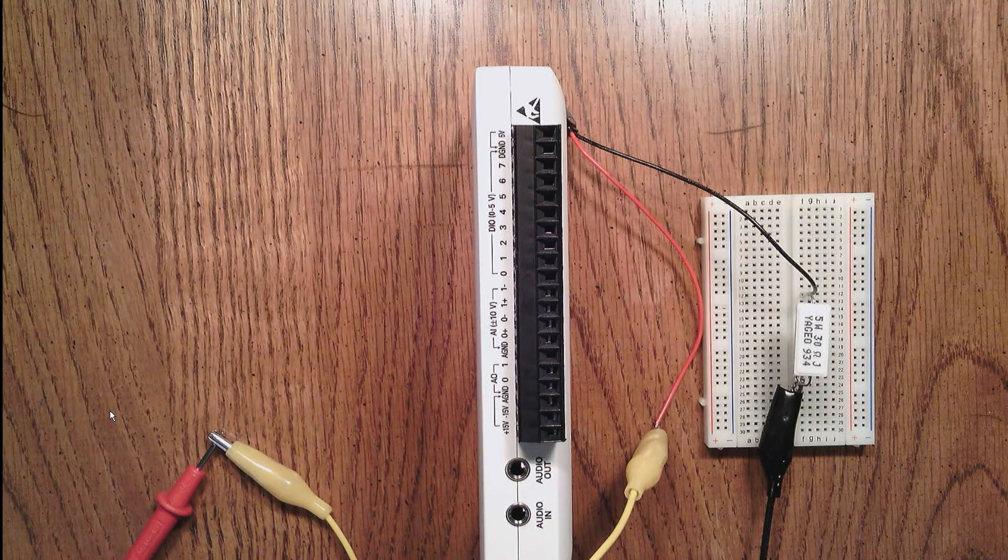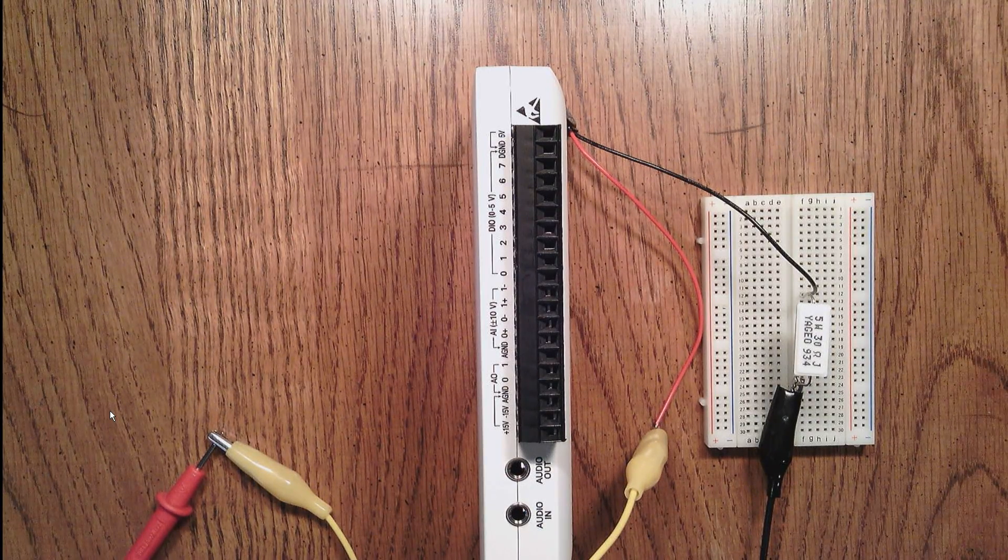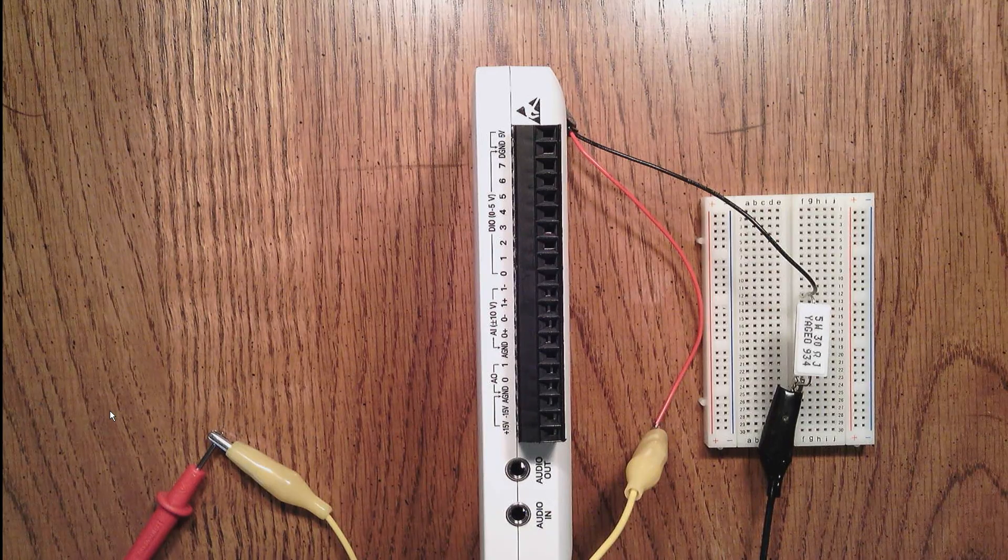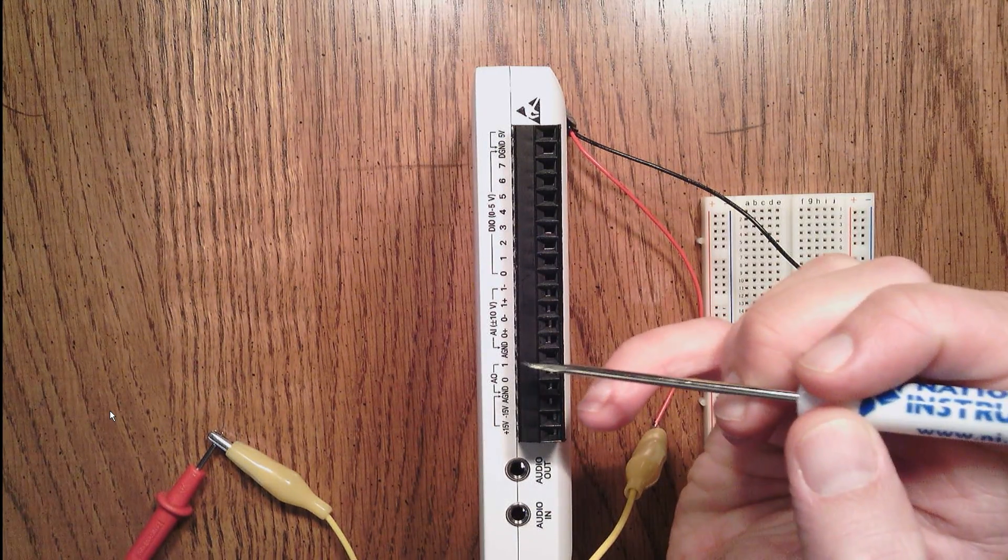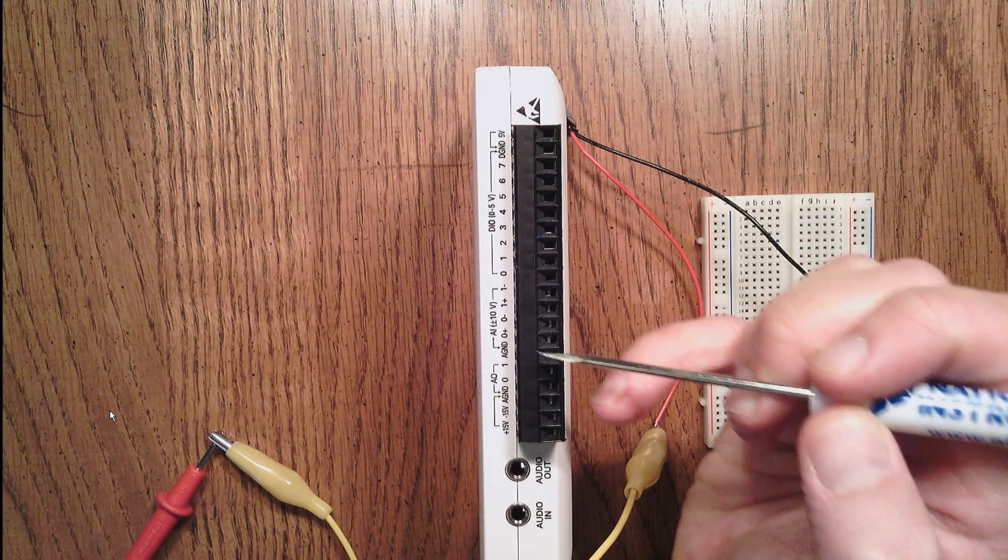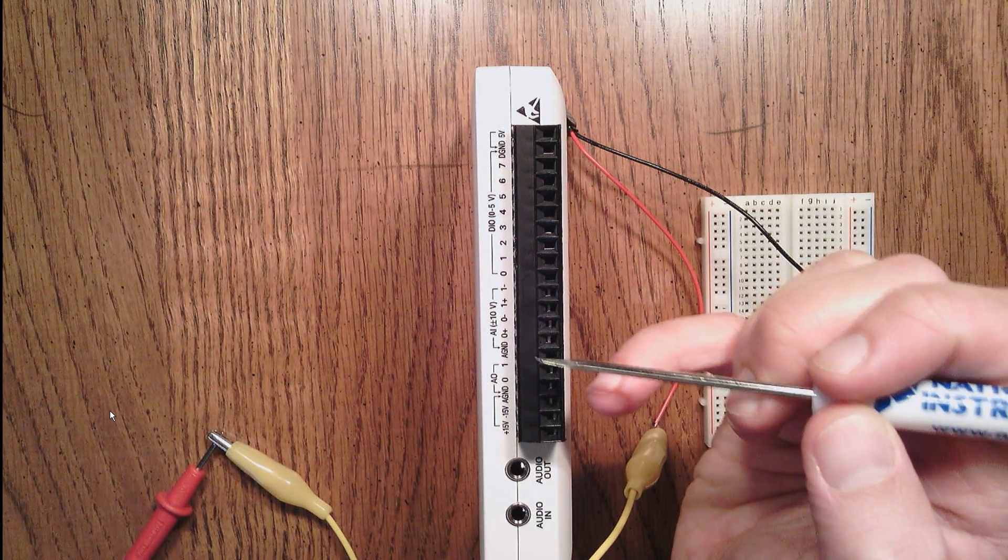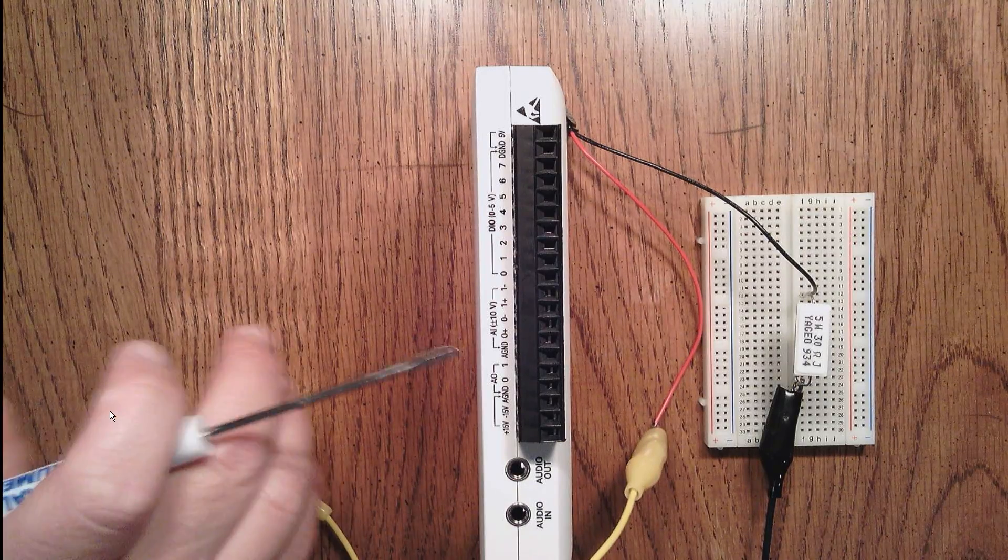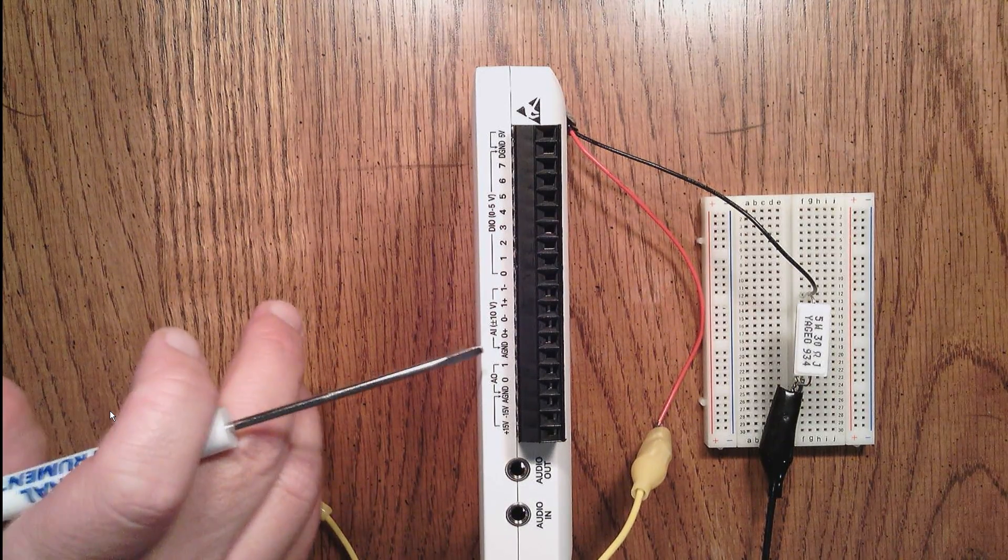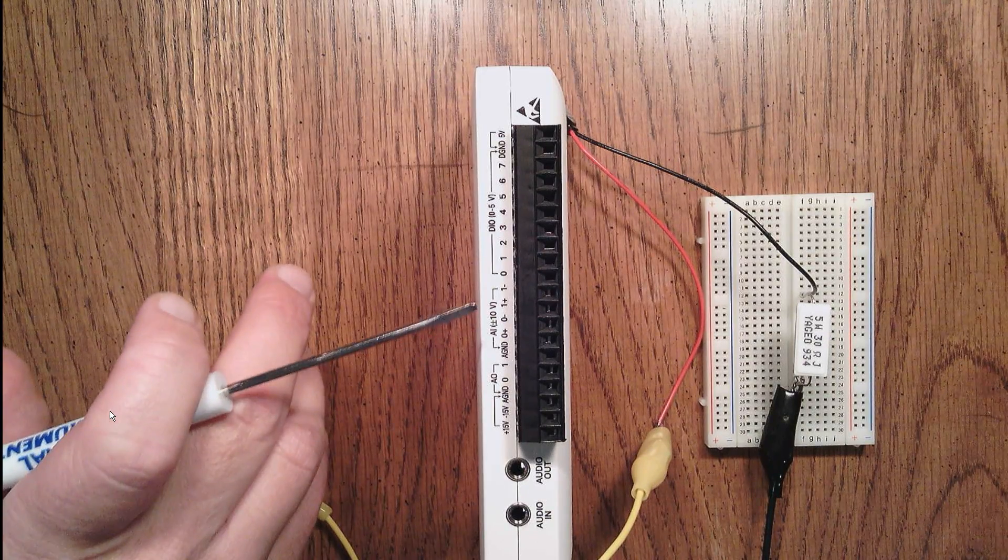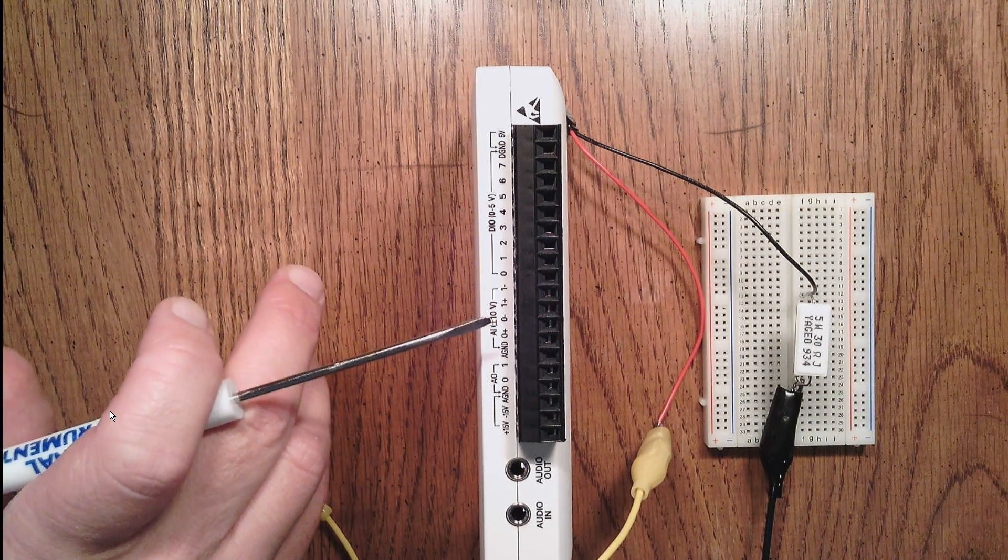For this voltage measurement, I'm going to use analog input channel 0. To do that, I'm going to need to connect two wires to measure the voltage on analog input channel 0, which is indicated on the MIDAC device by the 0 plus and the 0 minus, where the plus indicates the high side of the measurement and the minus sign indicates the low side of the measurement.